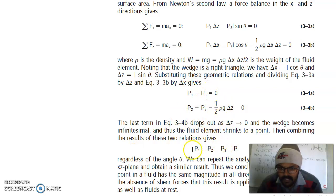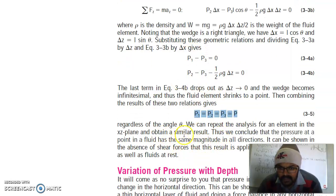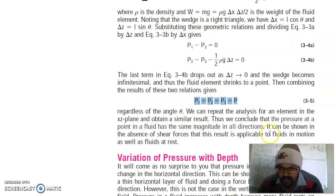When you solve this you will get all pressures equal. So regardless of the angle θ, we can repeat this analysis for an element in the X, Y, Z plane and obtain a similar result. Thus we conclude that pressure at a point in a fluid has the same magnitude in all directions. It can be shown that in the absence of shear forces, this result is applicable to fluids in motion as well as fluids at rest.